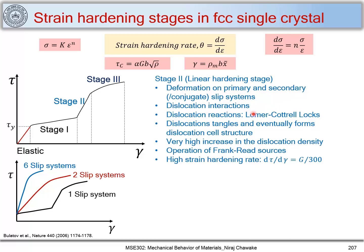There are also dislocation reactions taking place in stage two, such as the formation of Lomer-Cottrell locks. Dislocations on secondary and primary slip systems move and react with each other, forming locks. These dislocations move and can form Lomer-Cottrell locks when they react.